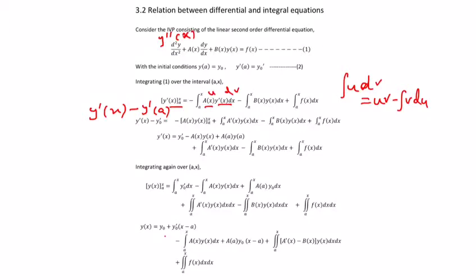So apply uv: u is a(x), v is y(x), evaluated from a to x. Then minus of minus gives plus, and you integrate v du from a to x, where v is y(x) and du is a dash(x) dx. The remaining terms are the same. Then bring y naught dash to the right side, and apply the limit — giving minus a(x) y(x) plus a(a) y(a). The remaining is the same.